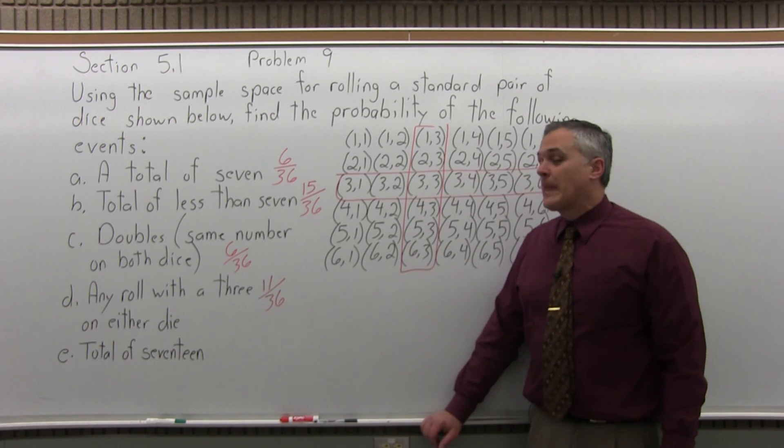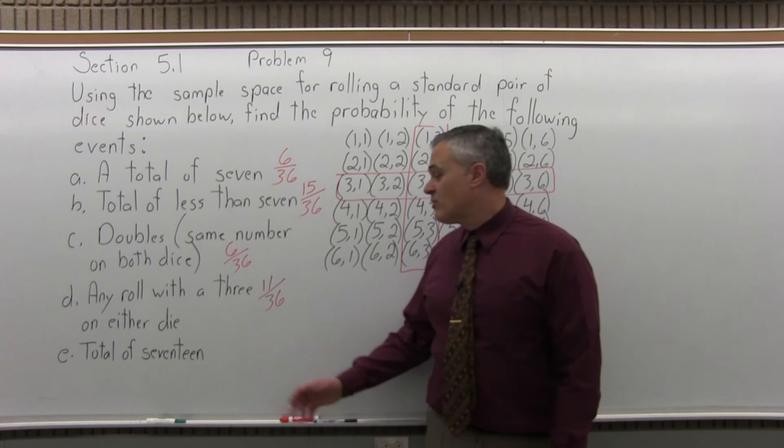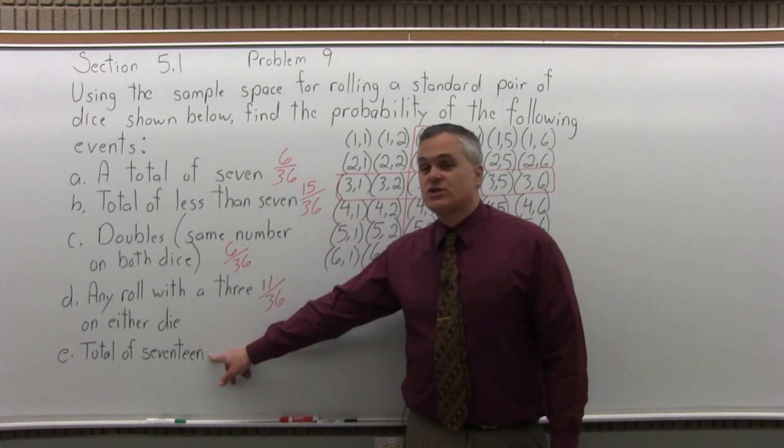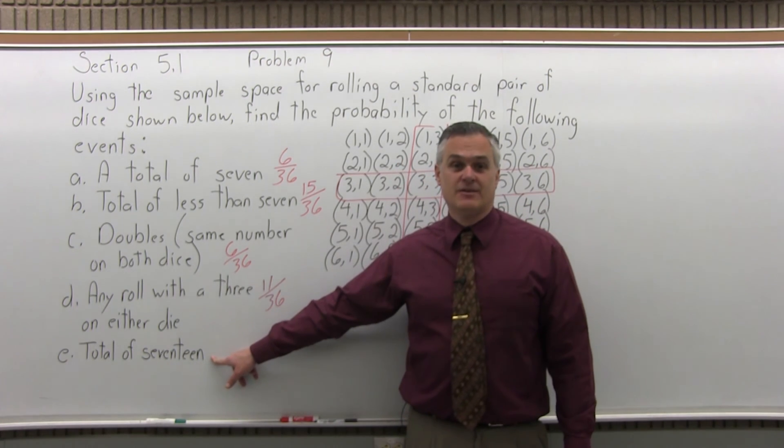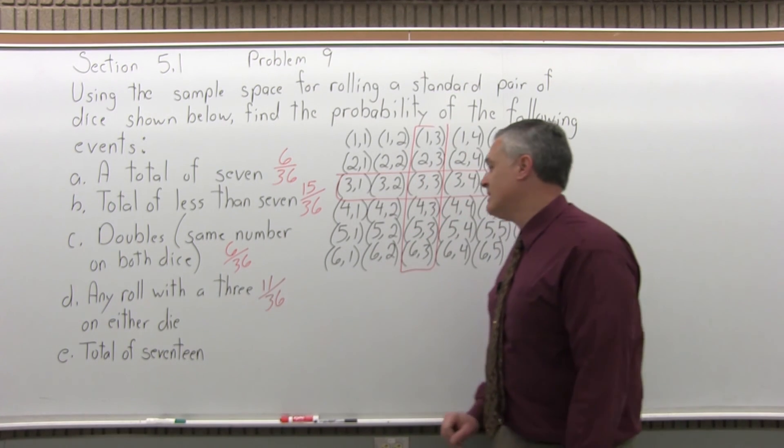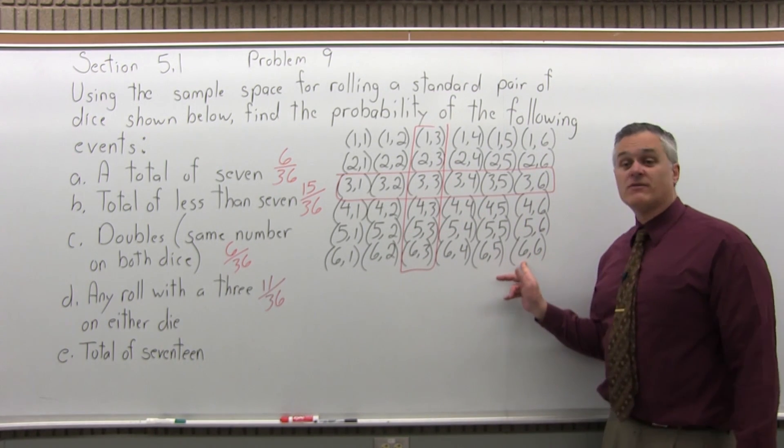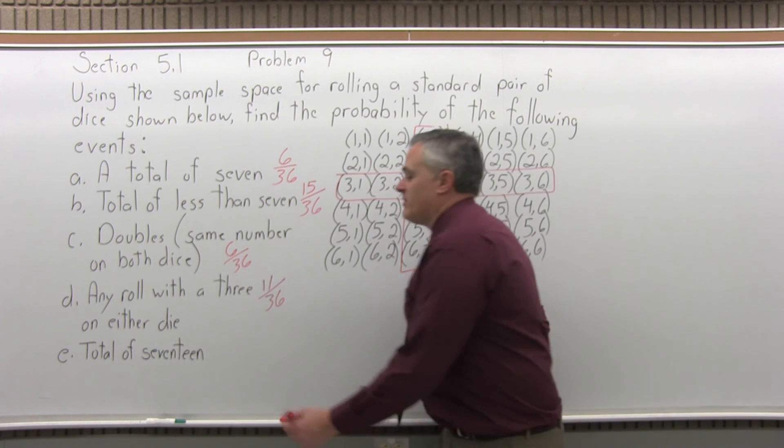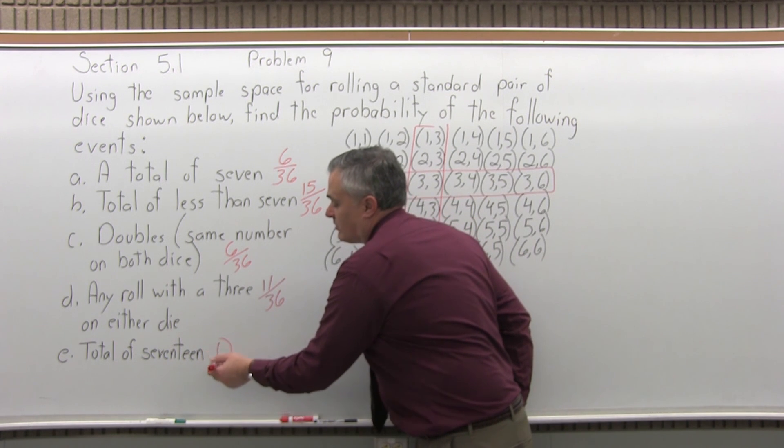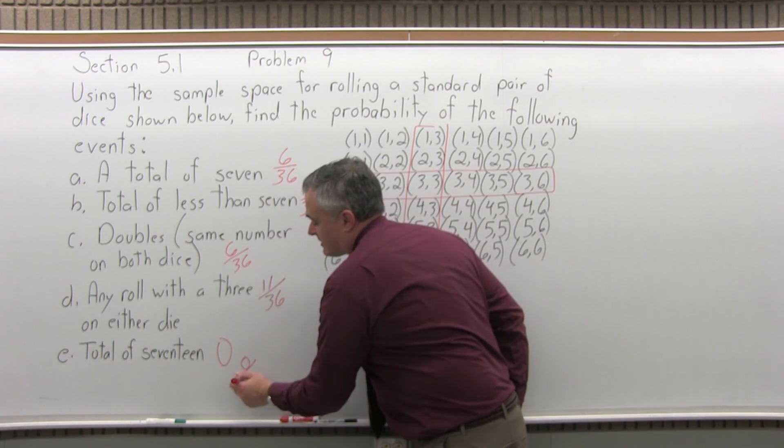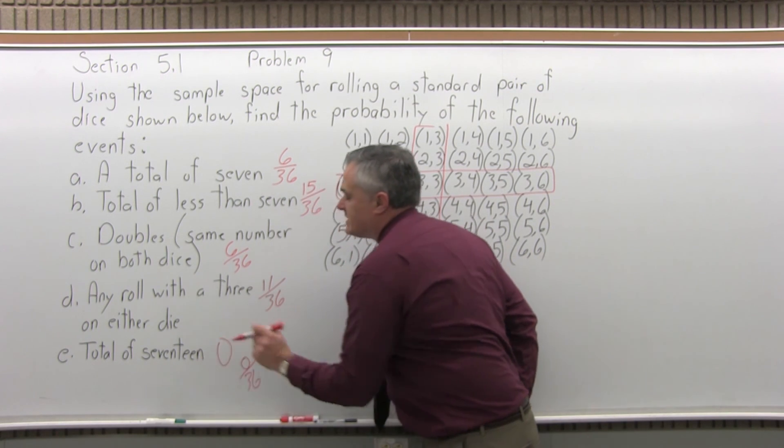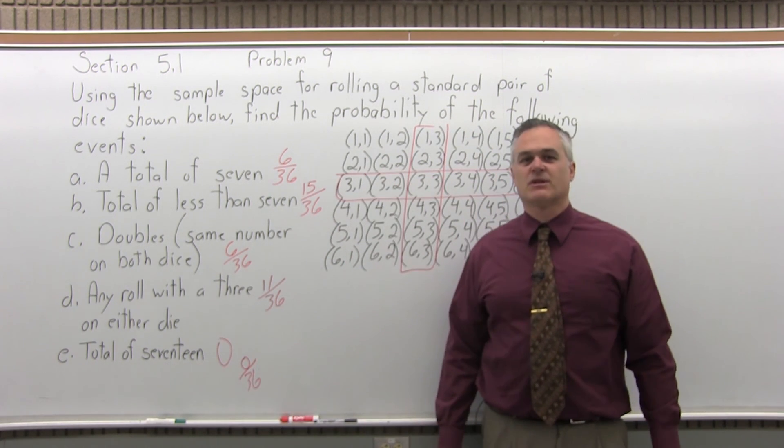And E, what's the probability of getting a roll on a standard pair of dice that shows a total of 17? Or you can't. The biggest total you get is 12 for 6,6. So the probability of getting a 17 would be 0. You could write 0 over 36 if you like, but you can just put plain old 0. It's impossible. You can't get a 17 with regular dice.